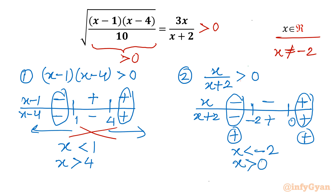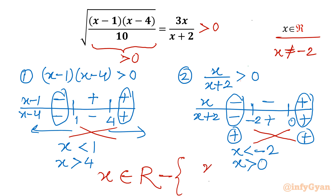So the conclusion is x should not lie between minus 2 and 0. Our domain is all real numbers except two intervals: x lying between 1 and 4 is rejected, and x lying between minus 2 and 0 is also rejected. These two intervals are exempted; otherwise all real values are valid.